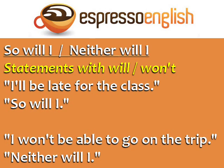So will I and neither will I are used to agree with statements with will and won't. 'I'll be late for the class' — so will I. 'I won't be able to go on the trip' — neither will I.